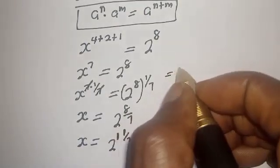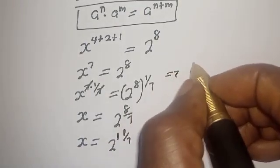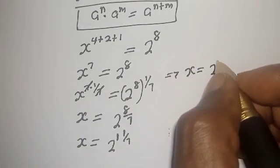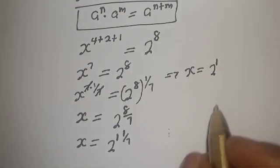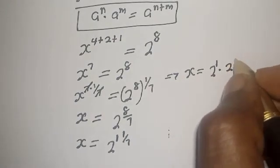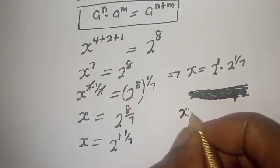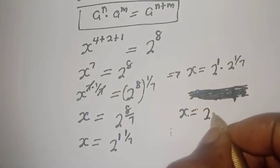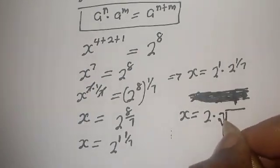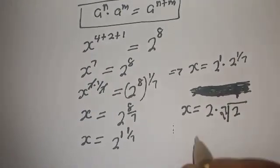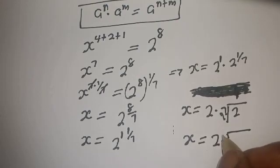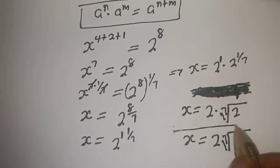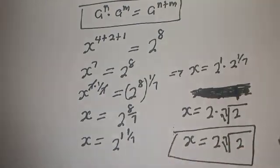S is equal to 2 raised to power 8 over 7, which implies S is equal to 2 raised to power 1 over 7, times 2. Therefore s is equal to 2 times the 7th root of 2. This is the final answer. If you enjoyed my class, please don't forget to like, share, comment, and subscribe. Thank you.